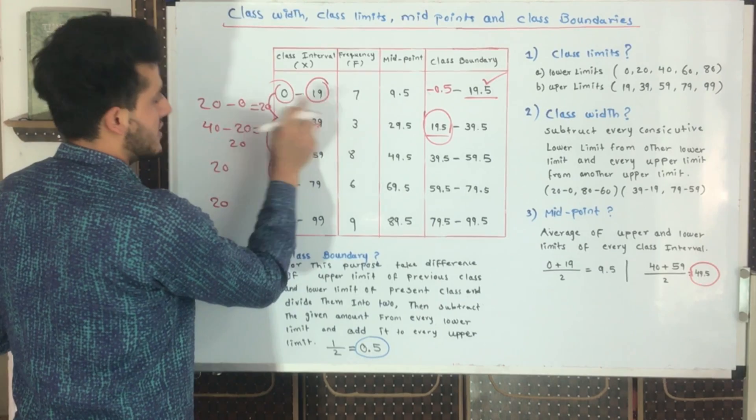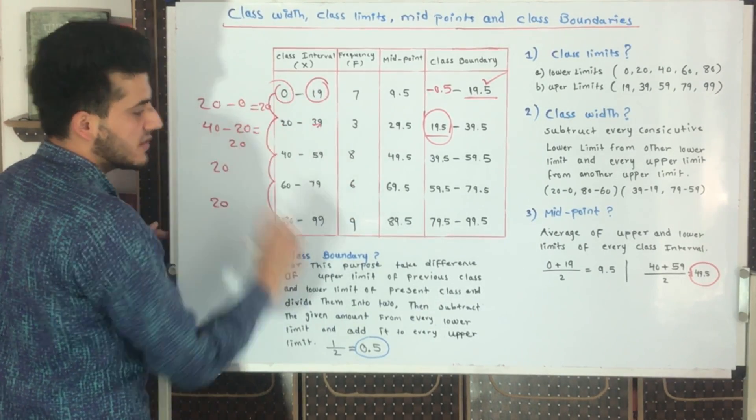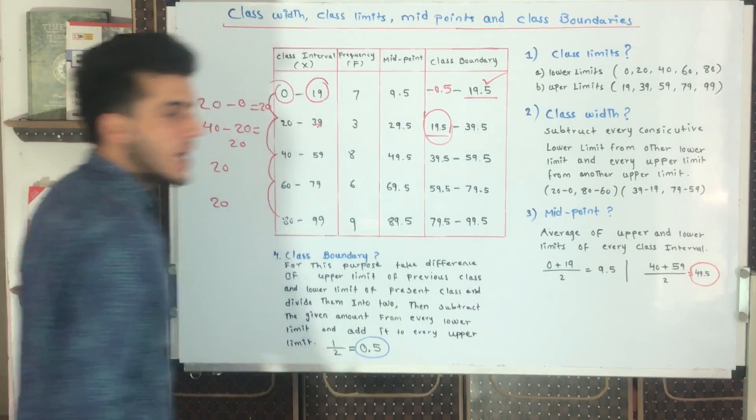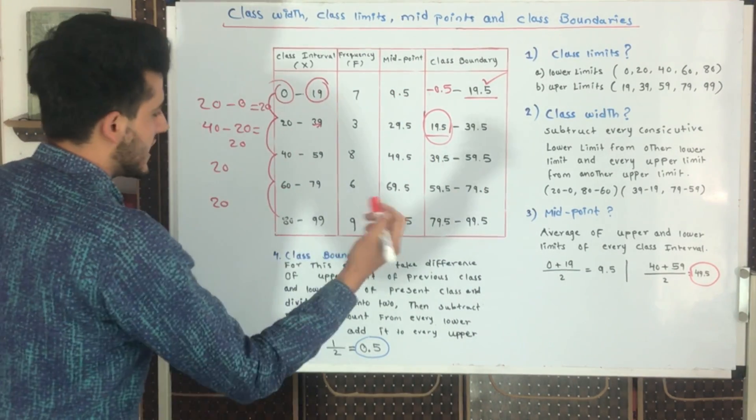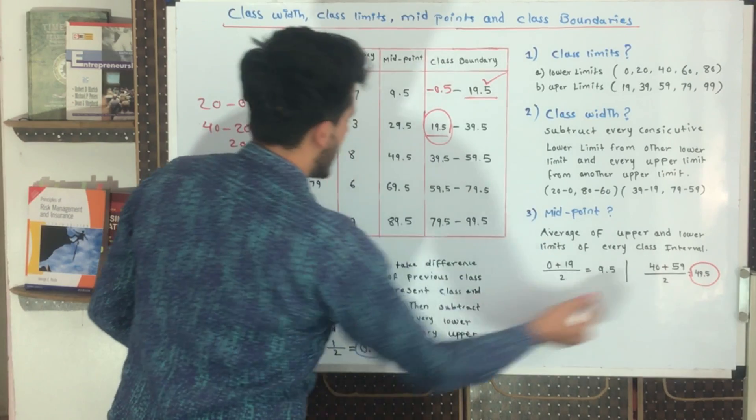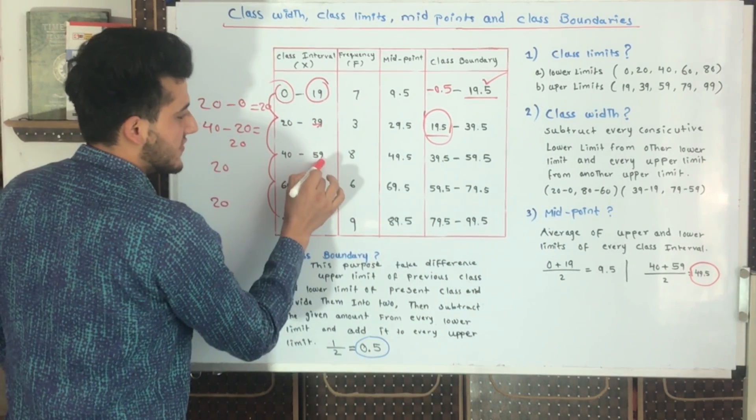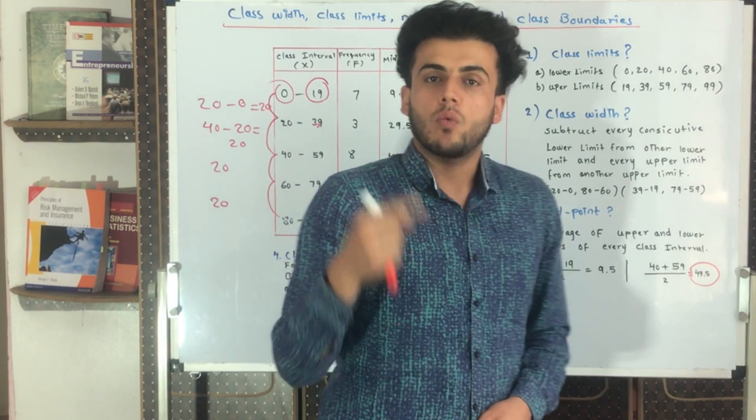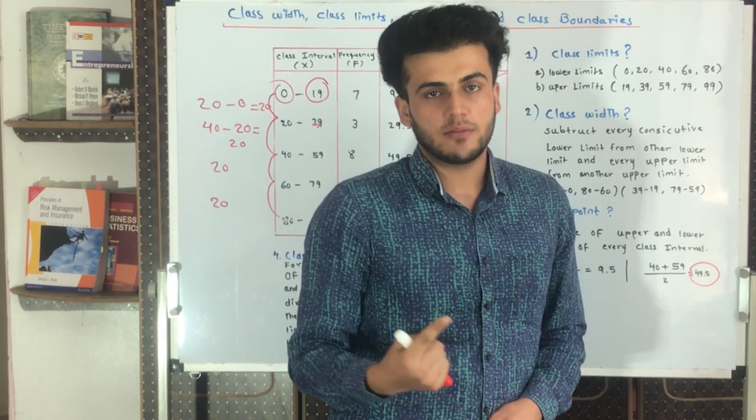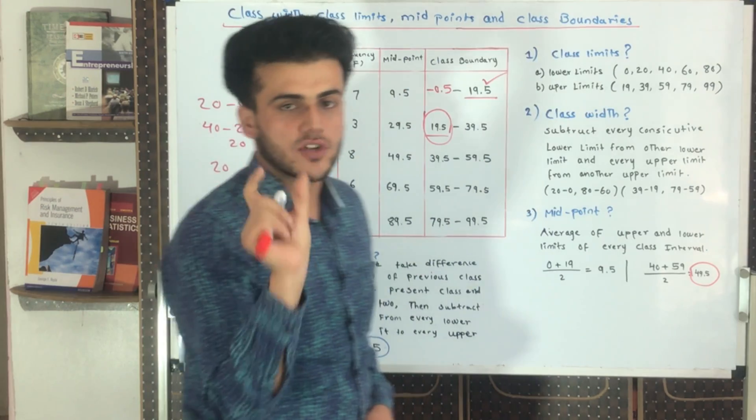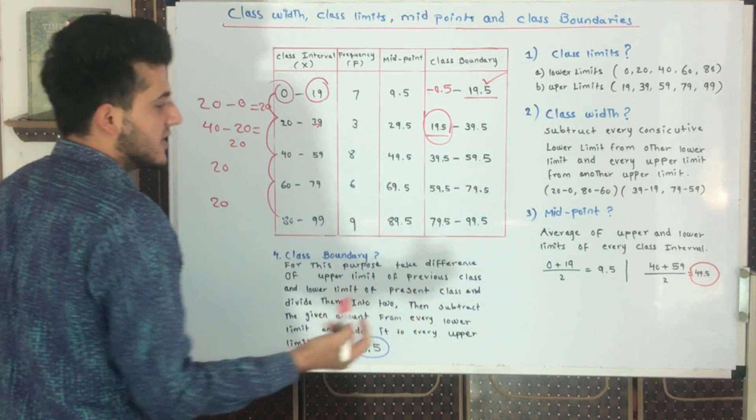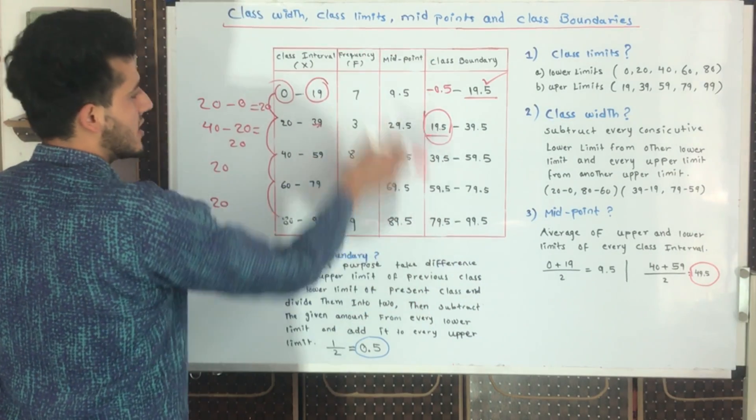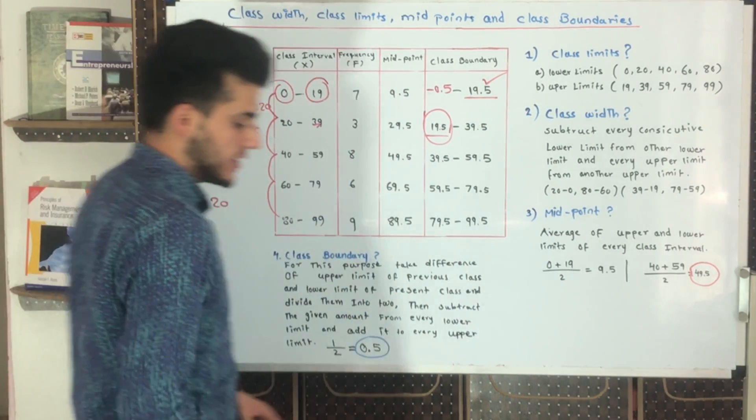How will we find that? We take the average of every lower limit and upper limit. 0 plus 19 divided by 2 equals 9.5. Or we can take another class: 40 plus 59 divided by 2 equals 49.5. Because we have only one lower limit and one upper limit, we take the average of both. The result would be 49.5 and we have all the list for every midpoint given here.